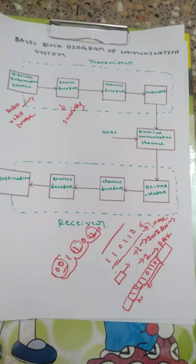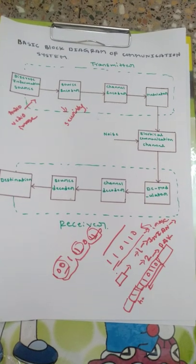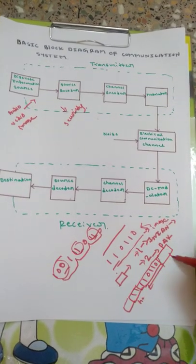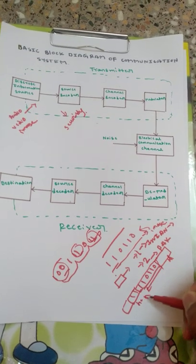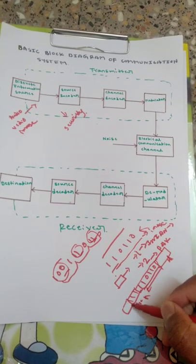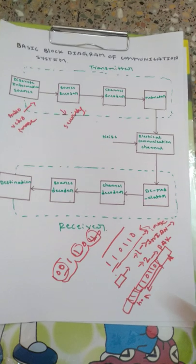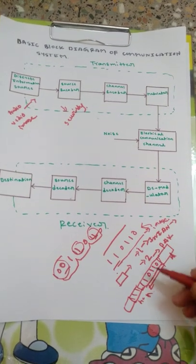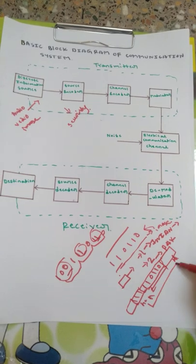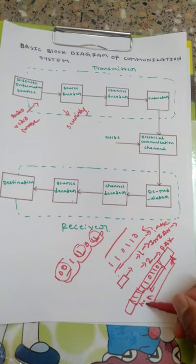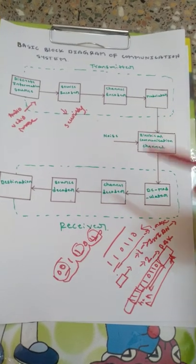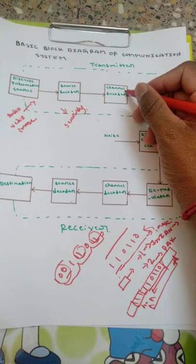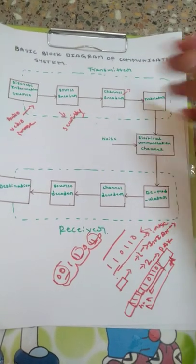The channel encoder appends destination address, source address, data length, and many other bits — for example, page length if it is a paging system. Quite a lot of technique bits are added to the data in the channel encoder, all for the purpose of proper and successful transmission of data in the channel.